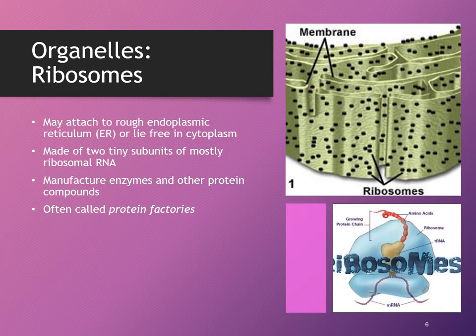Ribosomes are organelles that look like tiny little dots, visible as little black dots in the image. These are the ribosomes, and the membrane they're attached to is called the endoplasmic reticulum. There are two areas of the endoplasmic reticulum — smooth and rough. The area where ribosomes attach is called the rough ER; in the smooth ER, the ribosomes don't attach. The job of the ribosome is to make enzymes and proteins, so we often refer to them as protein factories.